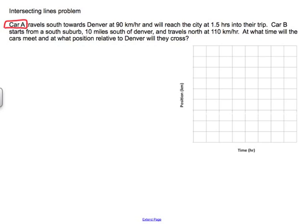First, let's identify the information we have available to us. We have two cars. Car A is initially traveling south towards Denver at a given velocity, and it's going to reach the city 1.5 hours into the trip. Car B starts 10 miles south of Denver and travels north at a known velocity. Everything revolves around Denver, so I'm going to say Denver is the origin — position 0, D equals 0. I'll start by writing functions for my two vehicles.